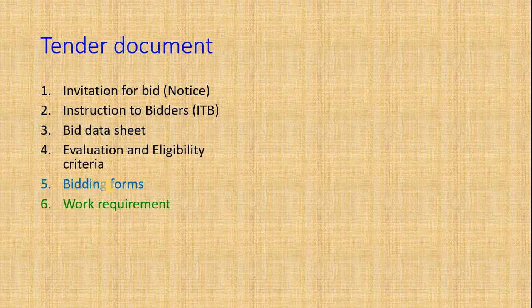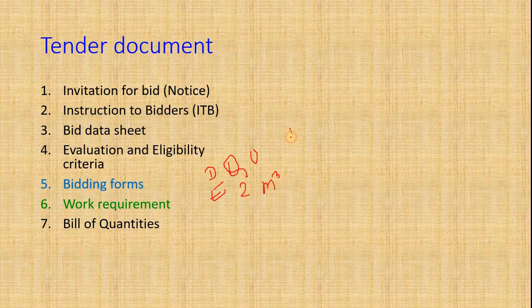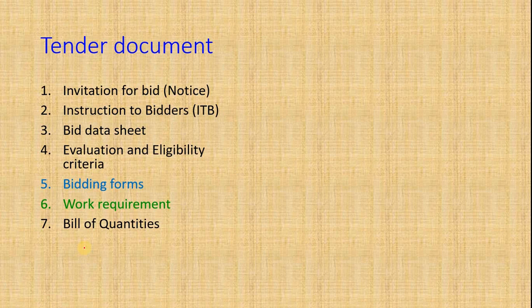Next are Bidding Forms, which contain bidding forms, work requirement, and Bill of Quantities. The Bill of Quantities — BOQ — is prepared by the public entity. Only quantities are mentioned, not rates. There will be a description of items, quantities, and units, such as for earthwork — suppose 2 cubic meters — and the rate is left blank to be filled by the contractor. The total will include subtotal, VAT at 13%, and grand total, which becomes the contract price. The lowest bidder who is also eligible will be awarded the contract.